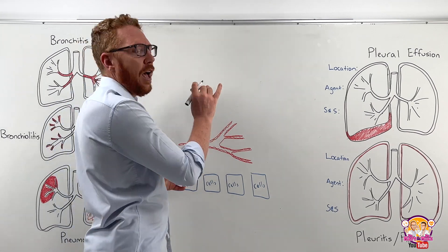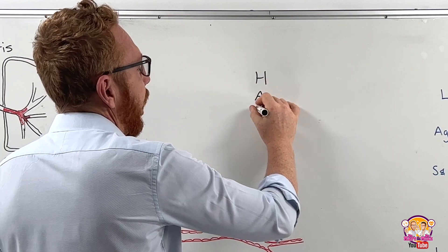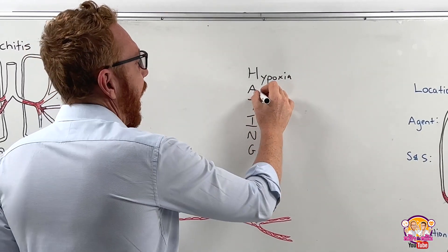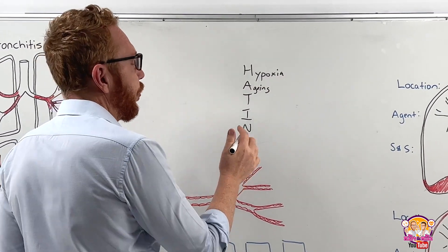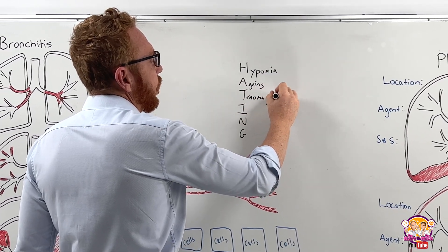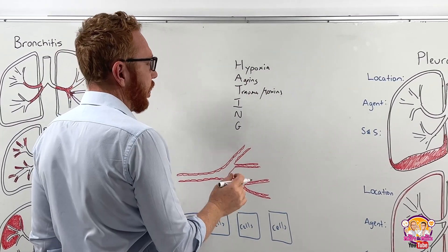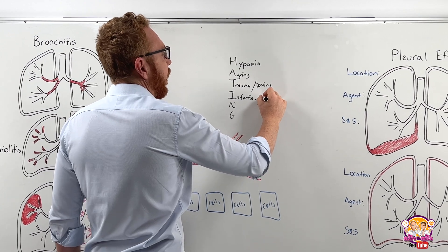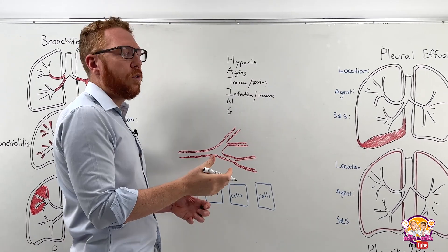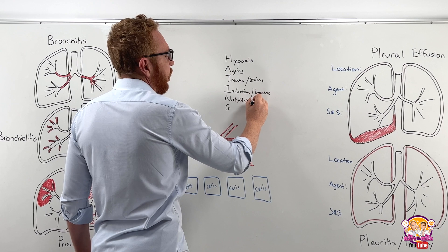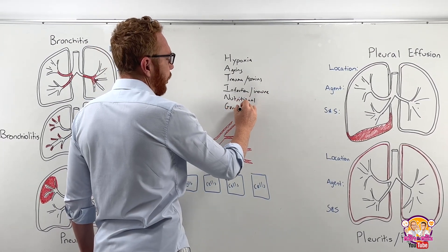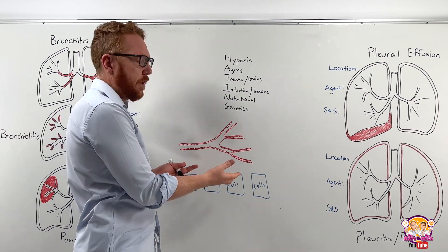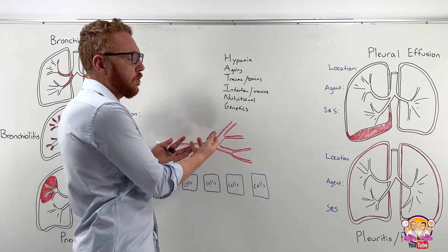So what leads to these injuries? A common way I use is the acronym HATING — H-A-T-I-N-G. H is hypoxia, a reduction in oxygen to tissue. A is aging — as we get older, we're more prone to inflammatory conditions. T could be trauma or toxins — mechanical trauma or certain chemicals that cause cell damage. I is infection — a lot of today's conditions are infection-based — but also immune-based, such as autoimmune or hypersensitivity. N is nutritional deficits, and G is genetic. Basically any one of those that happens to a cell will cause it to become injured or die, leading to necrosis and chemicals that tell blood vessels to dilate and become leaky.